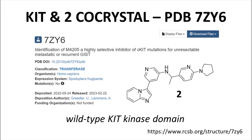Early in the program, the scientists were able to obtain a co-crystal of KIT — the unmutated wild-type form — bound to compound 2, which is identical to compound 1 except for the addition of a methyl group. The configuration at the stereocenter in 2 is not specified in the paper, but the bound form of 2 has the R configuration. The co-crystal is available in the protein databank as entry 7ZY6. Let's take a look at the target-ligand interactions in the co-crystal.